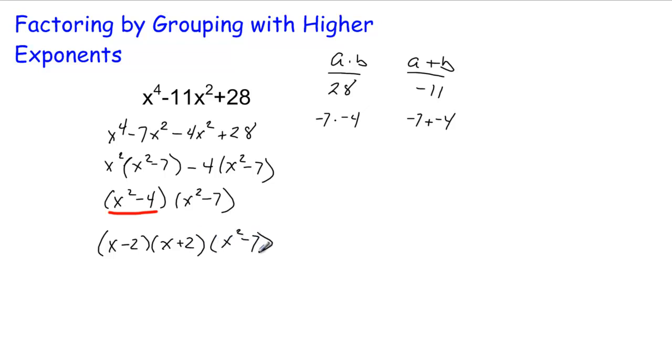Now, the x squared minus 7 is not factorable, so you leave it as it is. And that's the end. Very good.